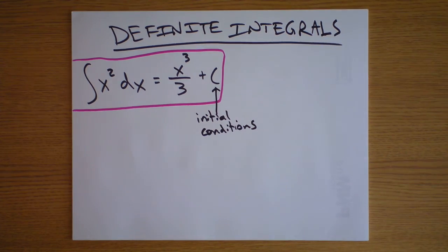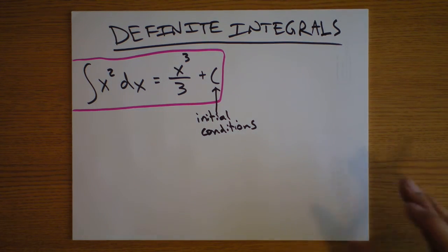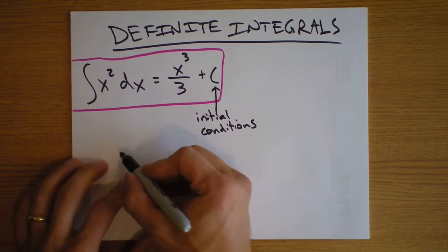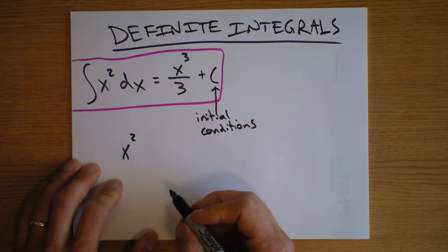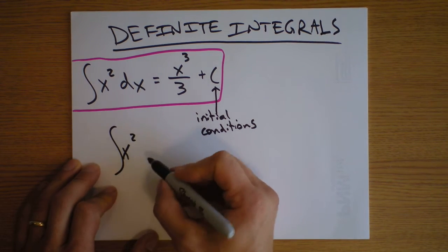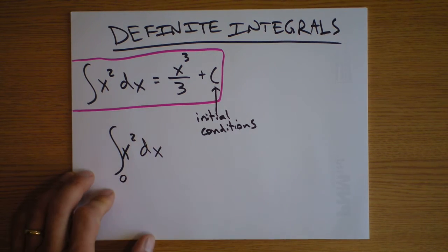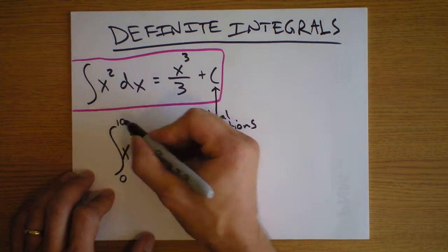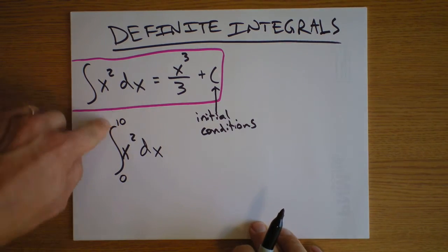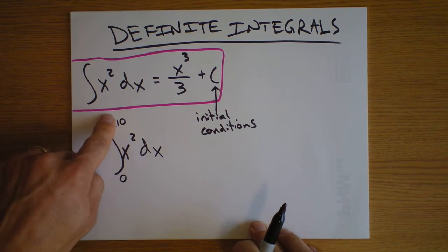So, an example of a definite integral would be the function x squared. We could still say the function x squared, and we'd still take an integral of it, and we'd do it over x. But we would say, let's take that integral between 0 and 10. The bounds are written here and here. This is where we start, and this is where we go.